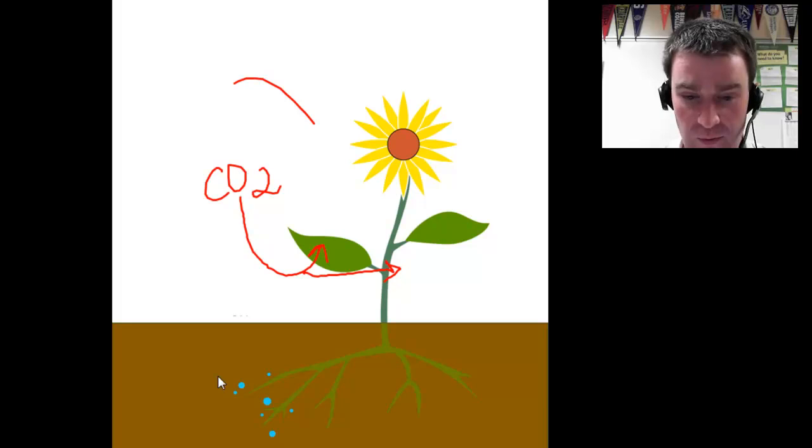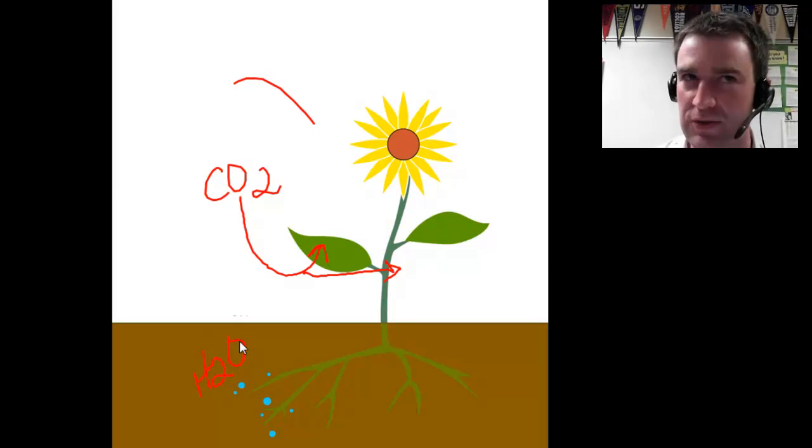So carbon dioxide from the air and water from the soil. I know sometimes students want to tell me that it rains on leaves and that it might be able to enter the same place carbon dioxide enters. But a plant is really getting its water from the soil, from the roots.